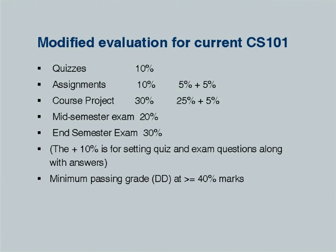The 10% additional marks — plus 5 and plus 5 — are set aside for setting quiz and exam questions along with answers. Each team of 5 people will set up a quiz question with the correct answer, wrong answers, reasons for correct and wrong answers, and mention which programming idea is tested. This is an important concept: every quiz, every exam question, every project, every assignment — any evaluation must necessarily be an additional learning experience for the student.